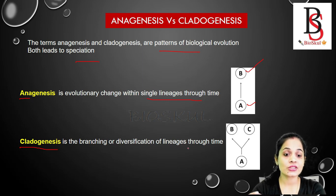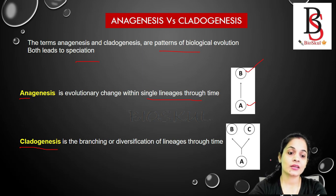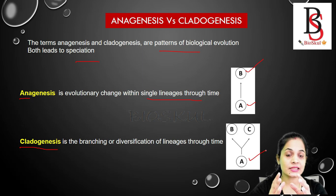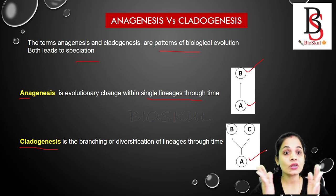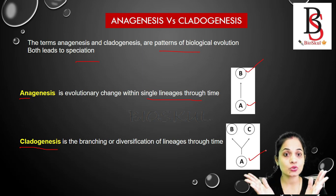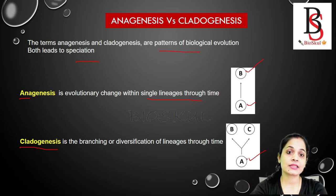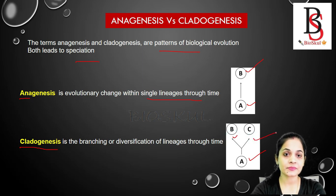On the other hand, cladogenesis — 'clados' means branch — is the branching or diversification of a lineage through time. Species A, through time, is diversified into two different species. It branches into species B and species C.